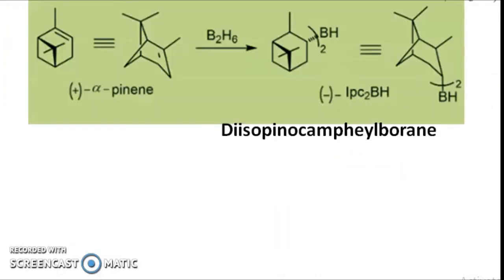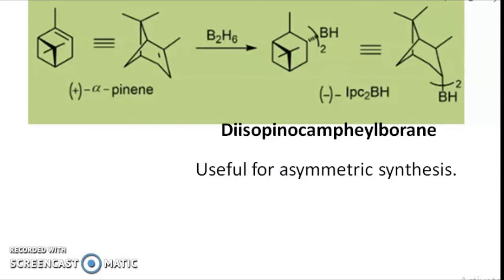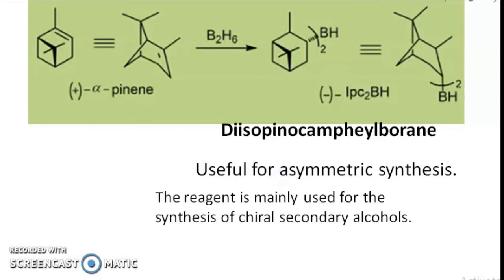Another one is diisopinocamphenyl borane, prepared from alpha-pinene. It is written in short as IPC2BH. We also have monoisopinocamphenyl borane, written as IPCBH2. This reagent is particularly used for asymmetric synthesis to get chiral secondary alcohols; both IPC2BH and IPCBH2 can be used.